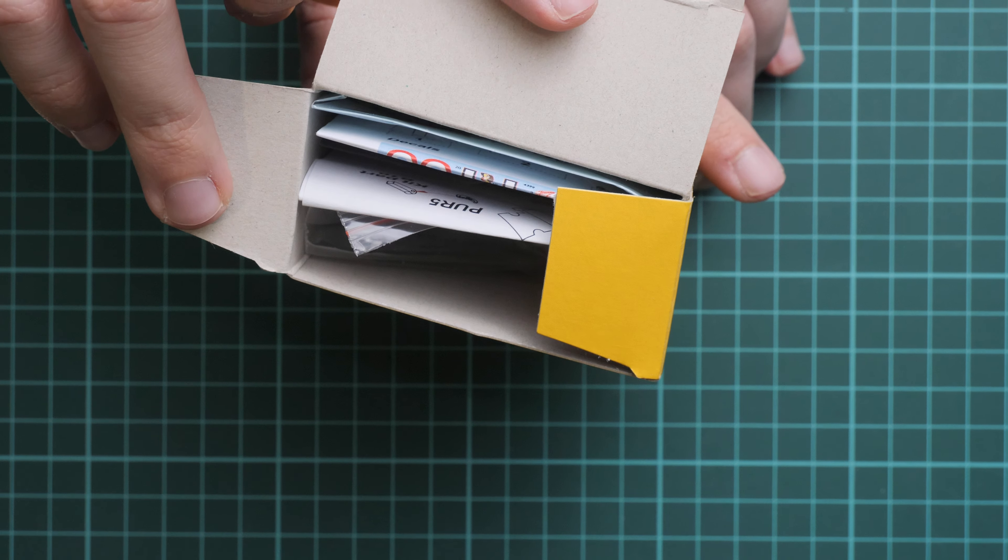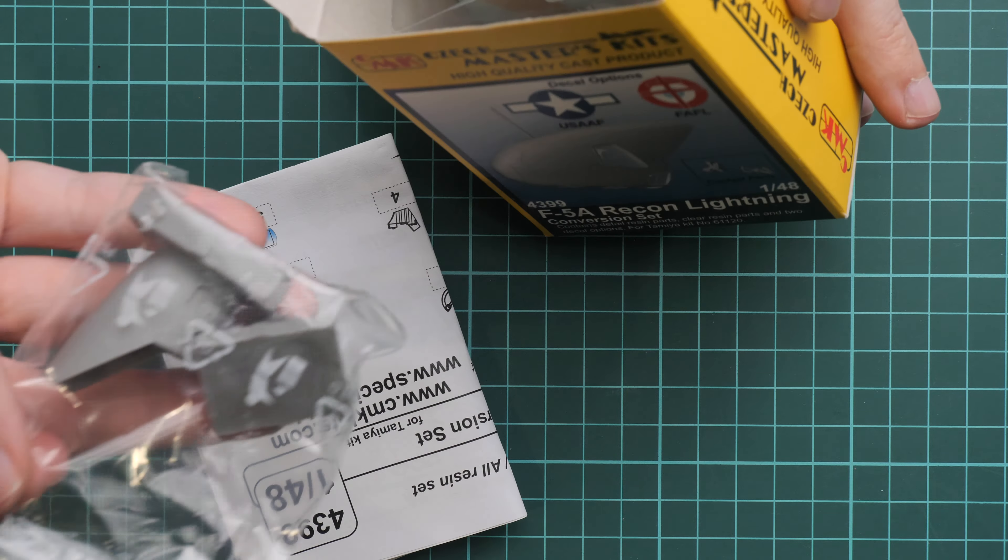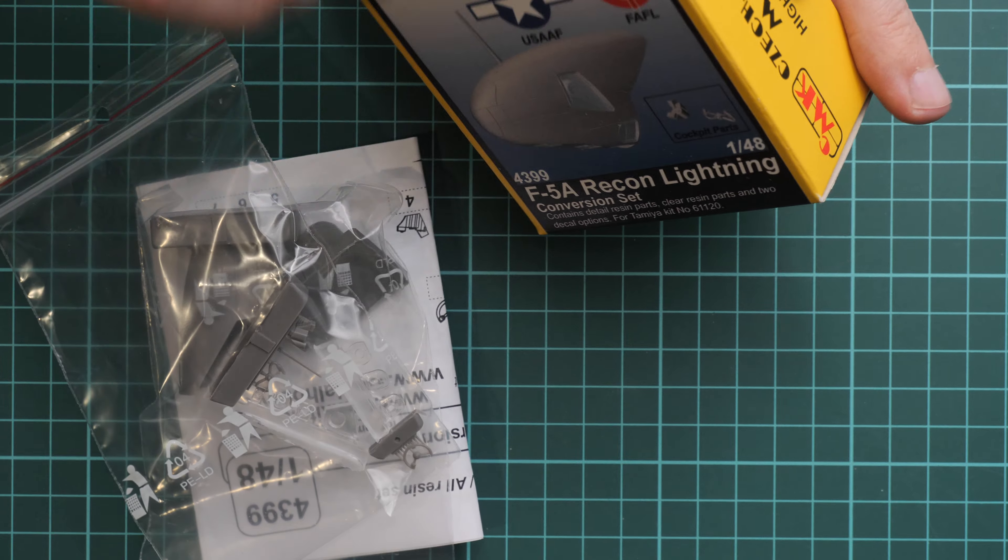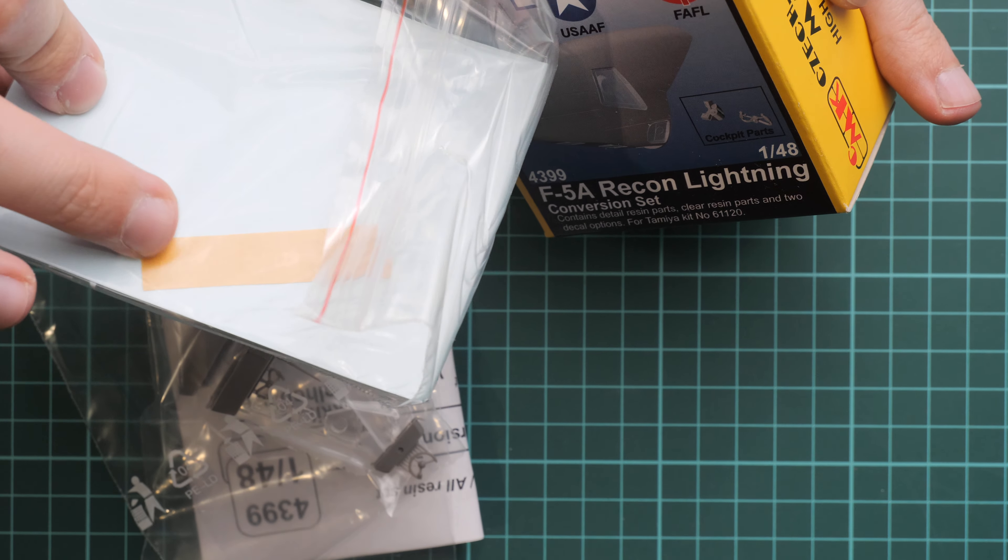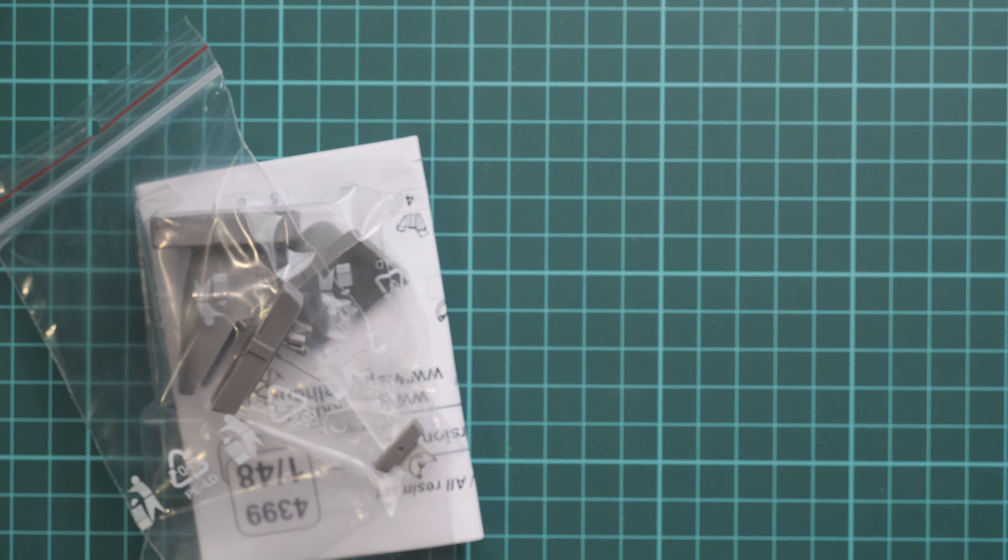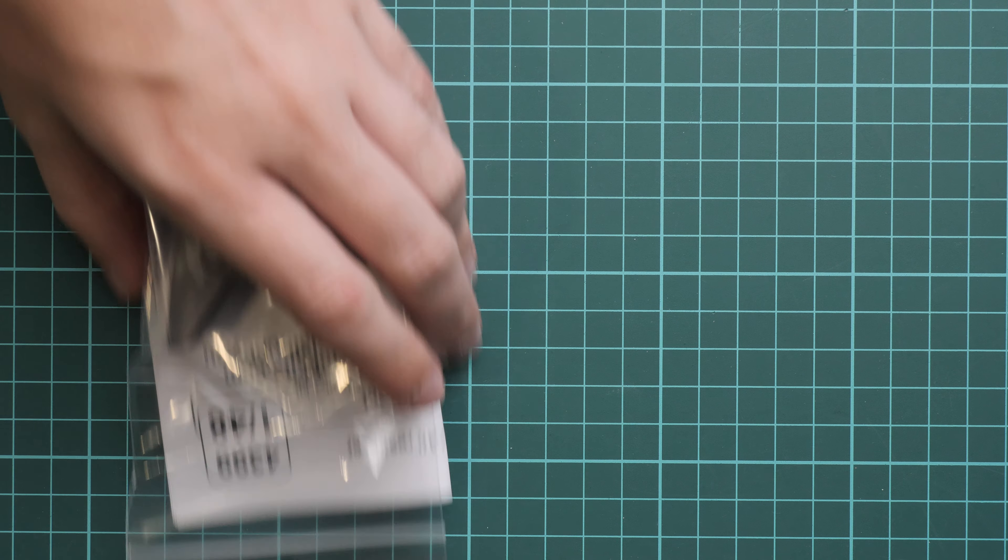This is a top-opening box and here's what we have inside. We have an assembly manual, some resin parts packed into separate plastic bags, a decal sheet, and also some masks. We'll have to check everything one by one.